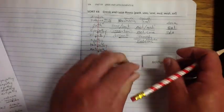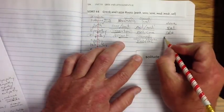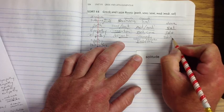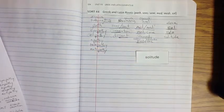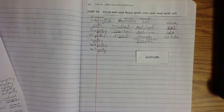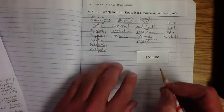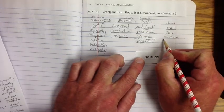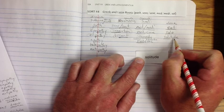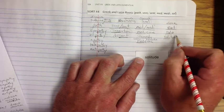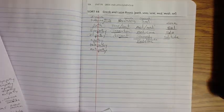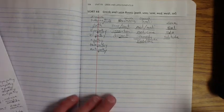Here's another one. Solitude. Solitude. Solitude is the same kind of thing where it means a state of being alone, a state of being alone. So if you're in solitude, that means you are by yourself, right?